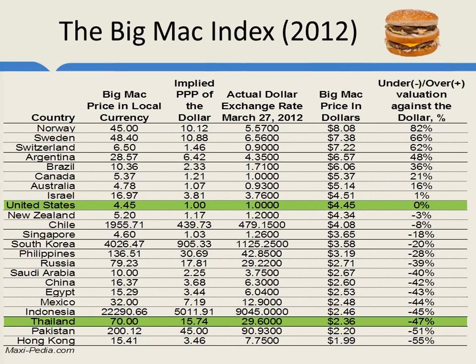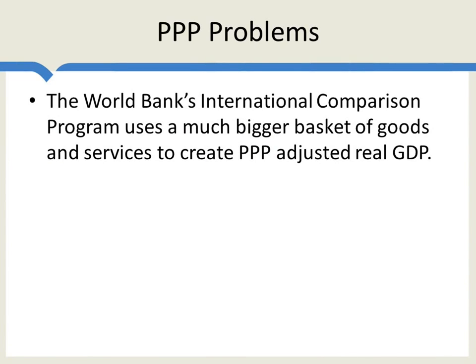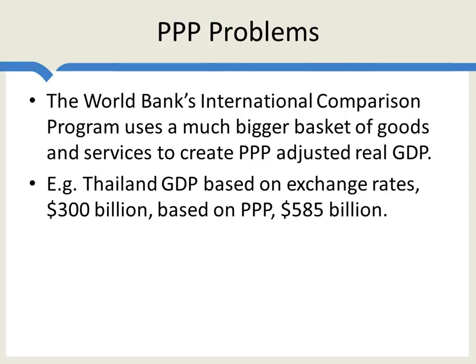So remember, we want to convert using purchasing power parity ratios in order to take into account that some goods, particularly non-tradable goods, are cheaper in poorer countries, and we do that by using the same basket of goods in all countries. The Big Mac index gives us the right idea, but we'd really like a bigger basket of goods. This is what the World Bank's International Comparison Program does — it creates a very large basket of goods to try and create PPP-adjusted real GDP. When you do this, Thailand's GDP based on exchange rates is $300 billion, but based on PPP it's $585 billion — a larger number.